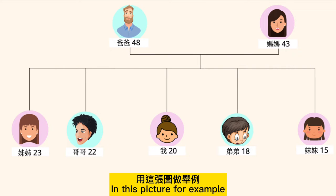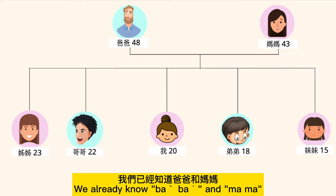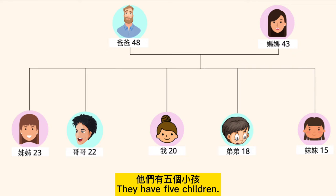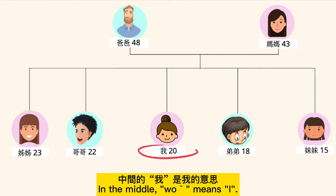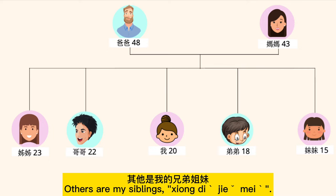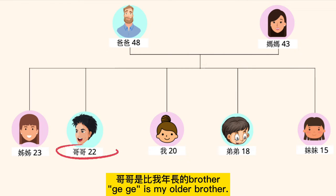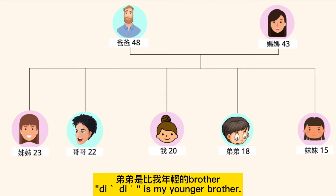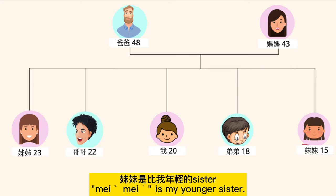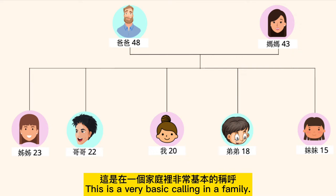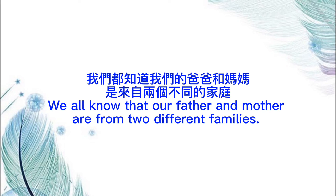In this picture, for example, we already know 爸爸 and 妈妈. They have five children — in the middle is 我, which means 'I'. The others are my siblings, 兄弟姐妹. 姐姐 is my older sister, 哥哥 is my older brother, 弟弟 is my younger brother, and 妹妹 is my younger sister. This is the very basic calling in a family.